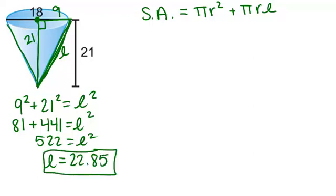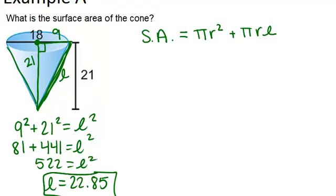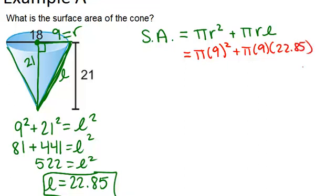Now that we know our slant height, and we also know our radius is 9, we can substitute that information into our formula. The surface area is pi times the radius, 9, squared, plus pi times the radius, times L, the slant height. Now, we just need to simplify this.